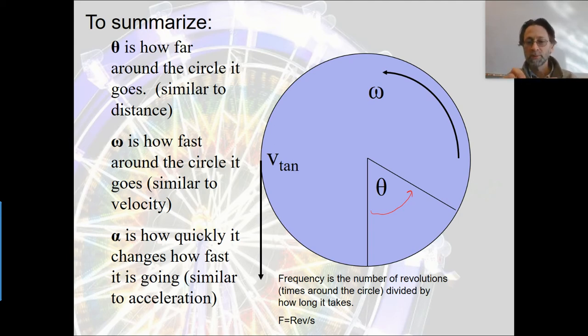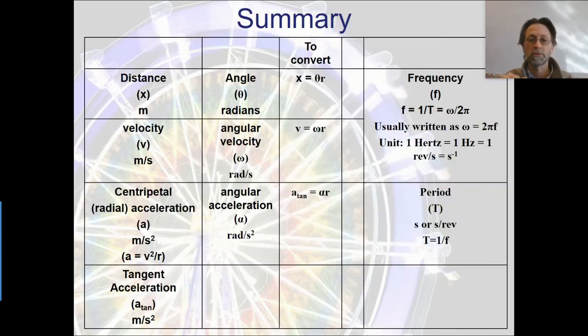Frequency becomes something we're going to want to talk about here because as it is rotating, it is coming back to the same point and doing it again and again. So it has a sort of periodic motion. And the frequency is the number of revolutions or times around the circle divided by how long it takes to make those times. So the frequency will be in revolutions per second.